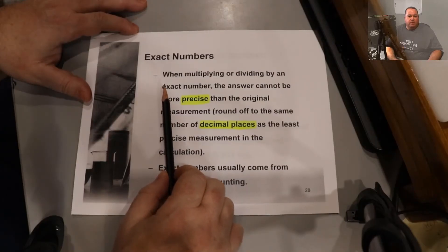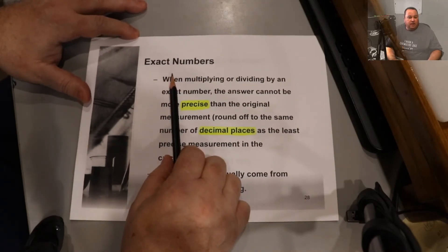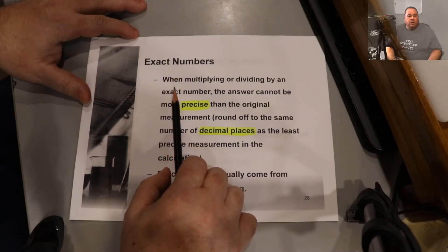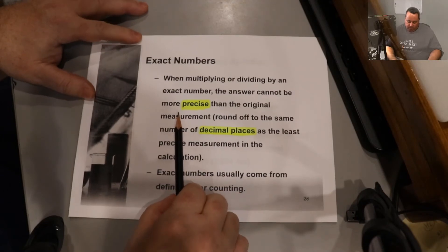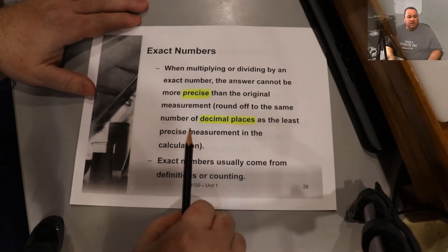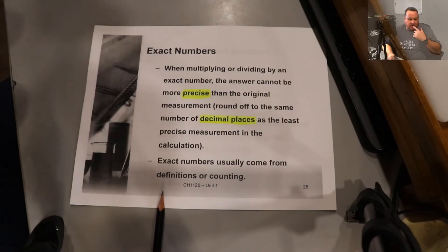One more thing to keep in mind is exact numbers in calculations. Exact numbers, as the name implies, are exact. They have an infinite number of sig figs, so when we multiply or divide by an exact number, the answer can't be any more precise than the original measurement. The rule is to round off to the least number of decimal places. We'll see exact numbers in counting or averaging or in definitions from formulas and similar type things.